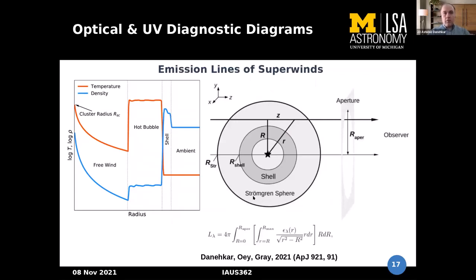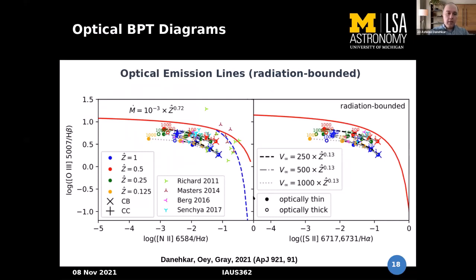To compare with observations, I calculated luminosity for both radiation-bounded and density-bounded models, and used this luminosity to build BPT diagnostic diagrams. I plotted [O III] versus [N II] and [S II]. There is good agreement with the typical starburst region below the red line in the BPT diagram, while above the red line is the active galactic nucleus region.